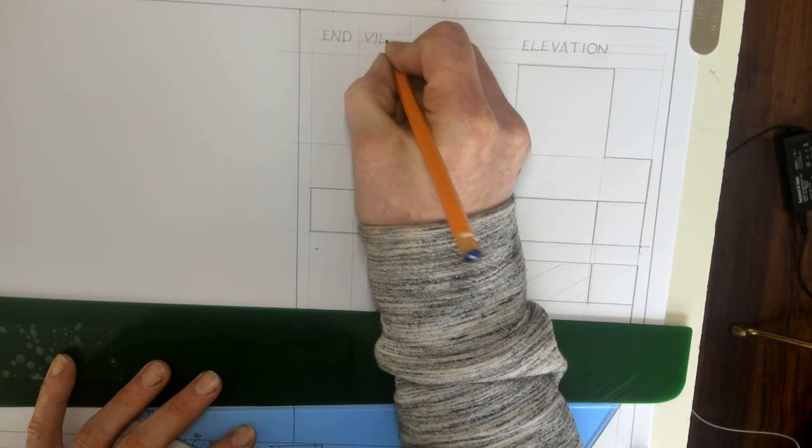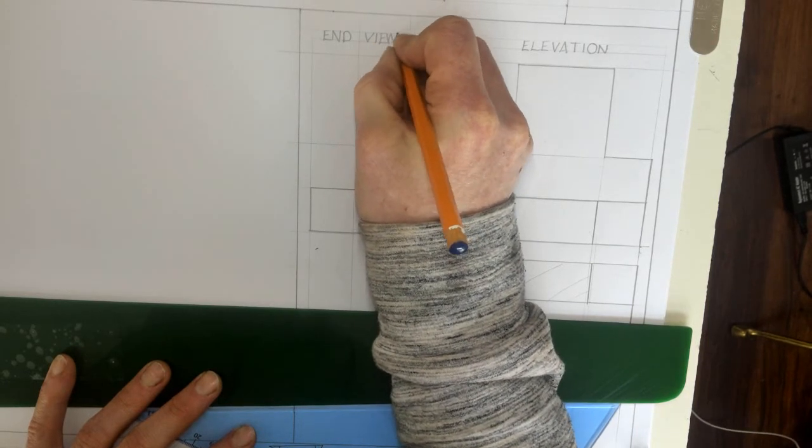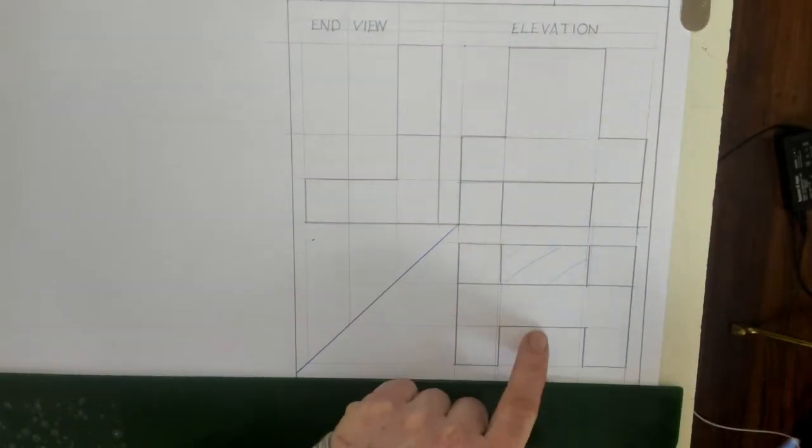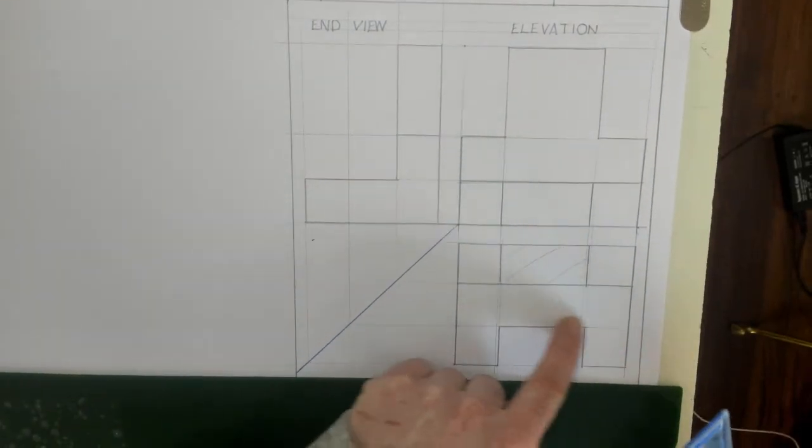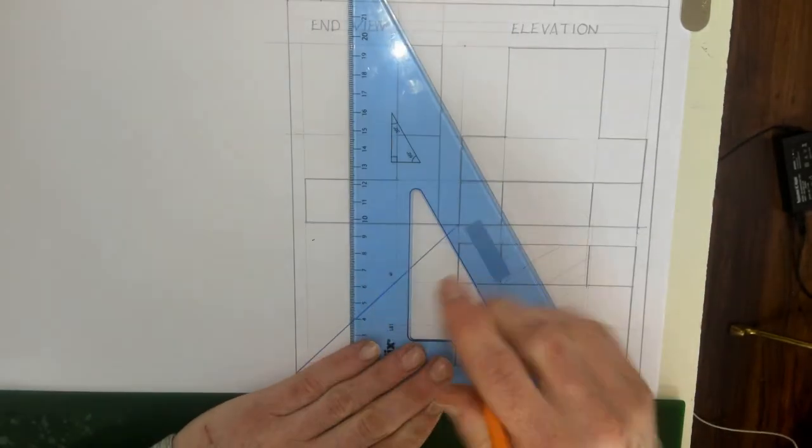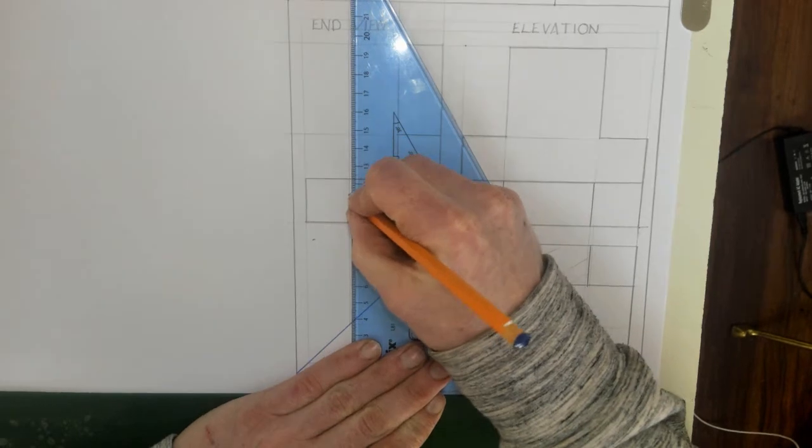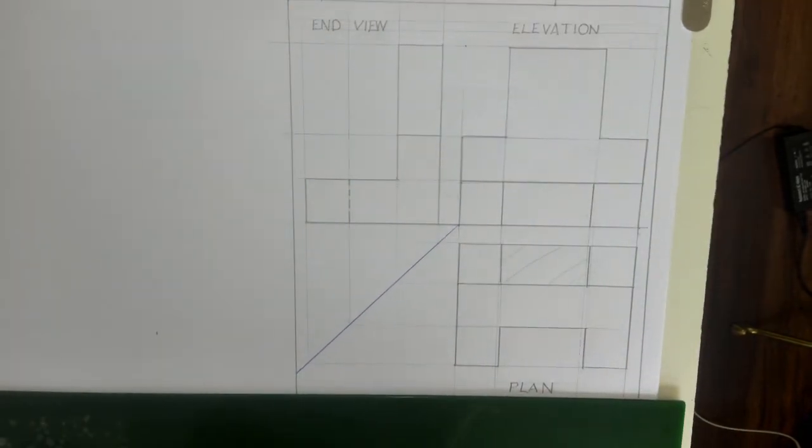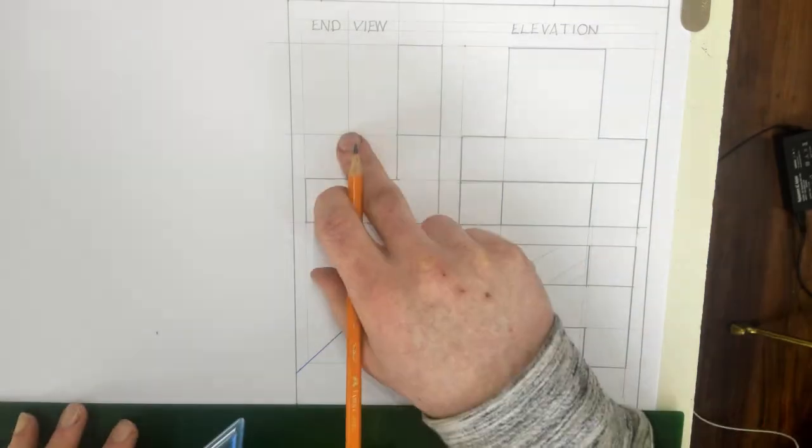It's called the end view. I also call it the end elevation. So one thing that I'm missing here is this: if there's a hole in it there would be a line here, so we can see here but it's still there. So we show this by a thing called hidden detail. Hidden detail is a dashed line, it's a broken line coming up. So that's the elevation, the plan, and the end elevation.